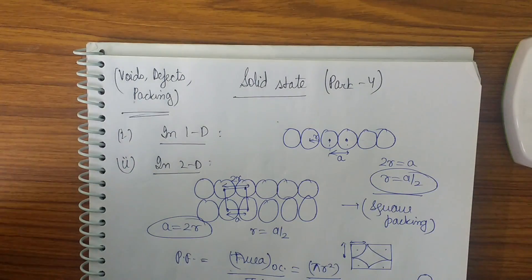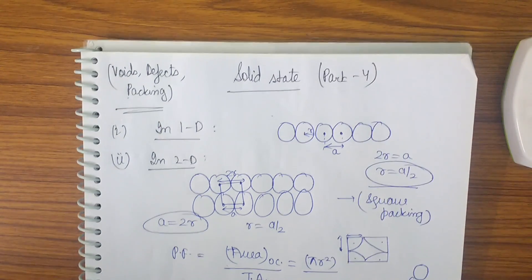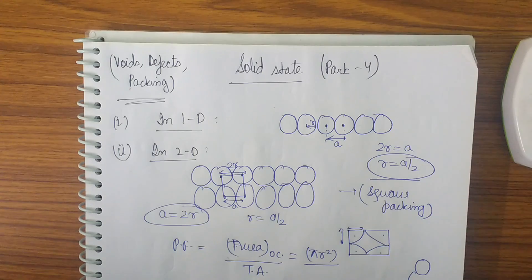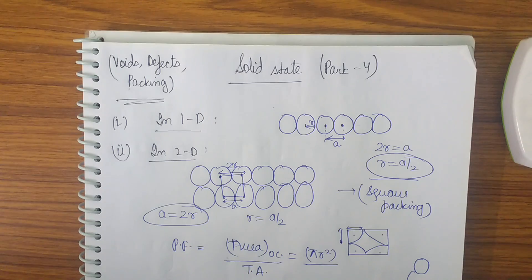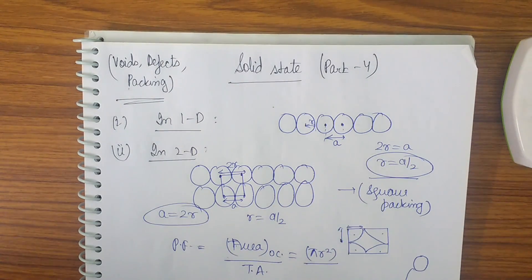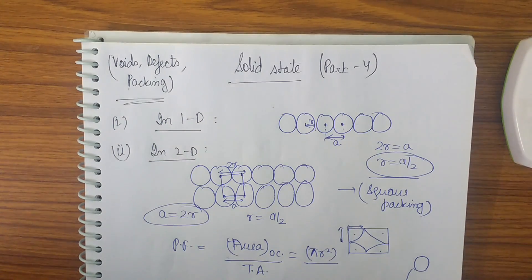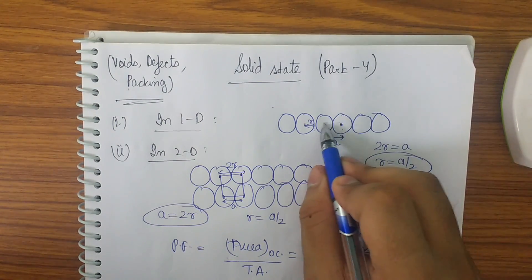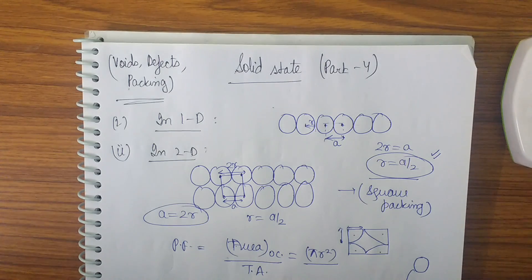In this video, I shall be discussing voids, defects, and some packing not discussed earlier. Let me begin with simple one-dimensional packing. In 1D, spheres are arranged next to each other, and the projection from above gives a circle. If the radius is r and side length is a, then 2r = a, so r = a/2.